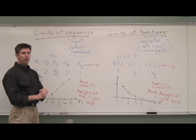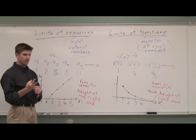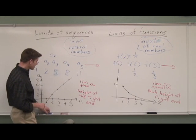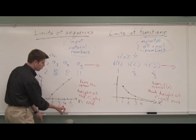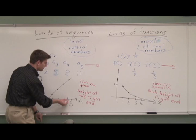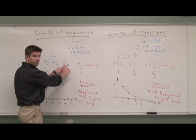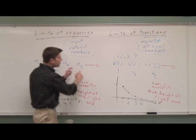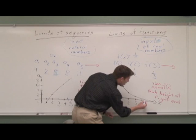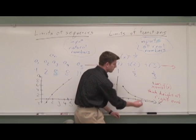Now, there is a third kind of limit that we will look at. So we'll look at three kinds of limits. Notice here, it doesn't really make any sense for my input to get close to 4.5. How can my input get close to 4.5 in a sequence? Well, there's a 4 and there's a 5. And that's it.